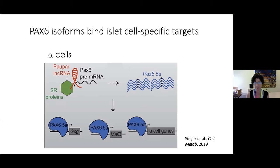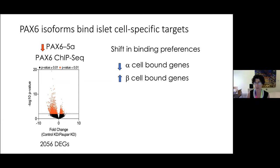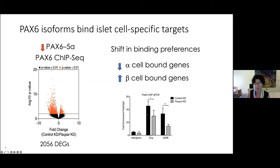A lncRNA located near Pax6 facilitates retention of the 5A isoform, which predominantly binds alpha-cell-specific genes. This was published from my lab in Cell Metabolism. When we decreased the 5A isoform in alpha cells, we changed the DNA binding specificity of Pax6 — a shift away from alpha-cell-bound genes and toward beta cell genes, including decreased binding at the glucagon promoter and at the MAF-B promoter, another alpha cell transcription factor.